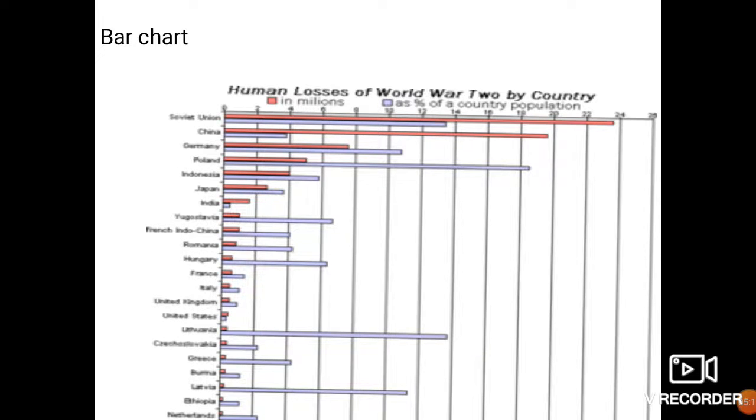Next is the bar chart. A bar chart is similar like column chart but the only difference is that in this the rectangular boxes are depicted in a horizontal manner.